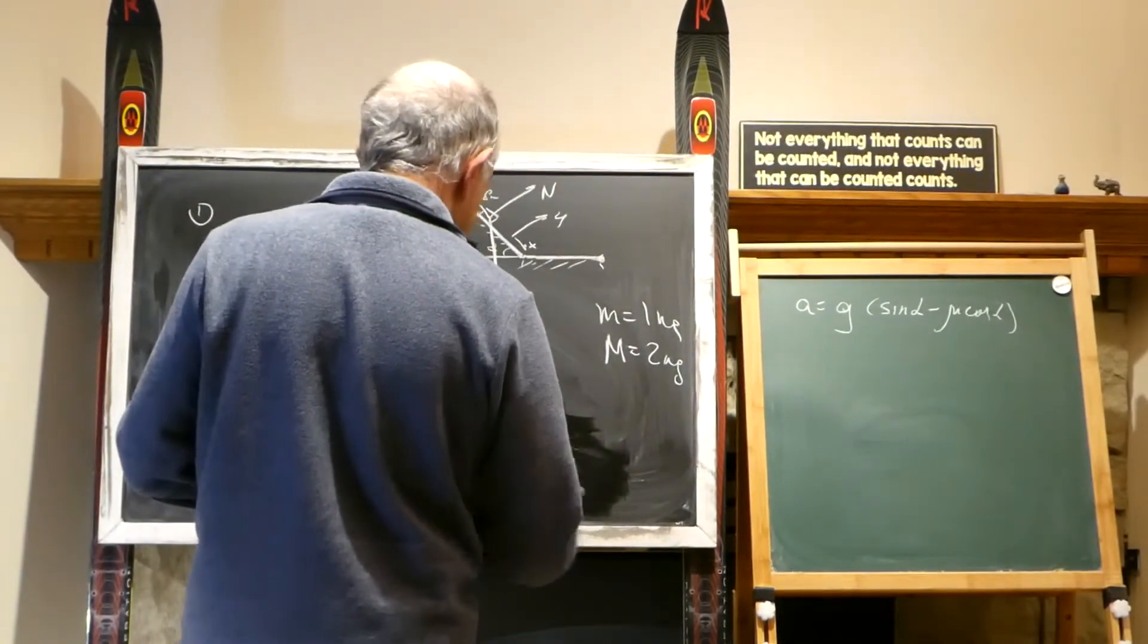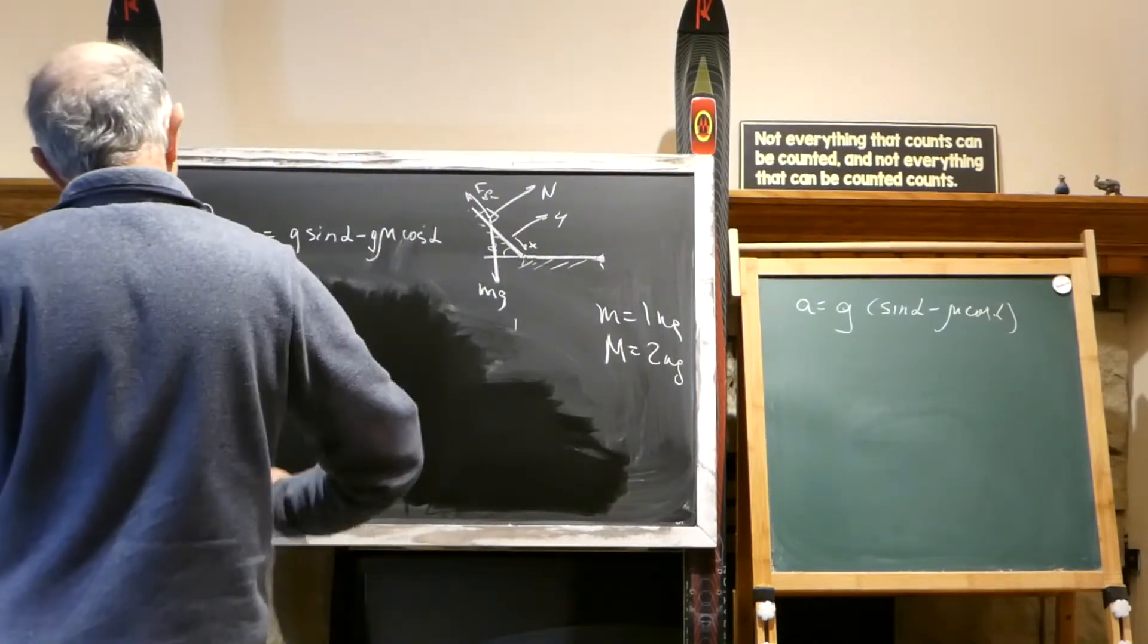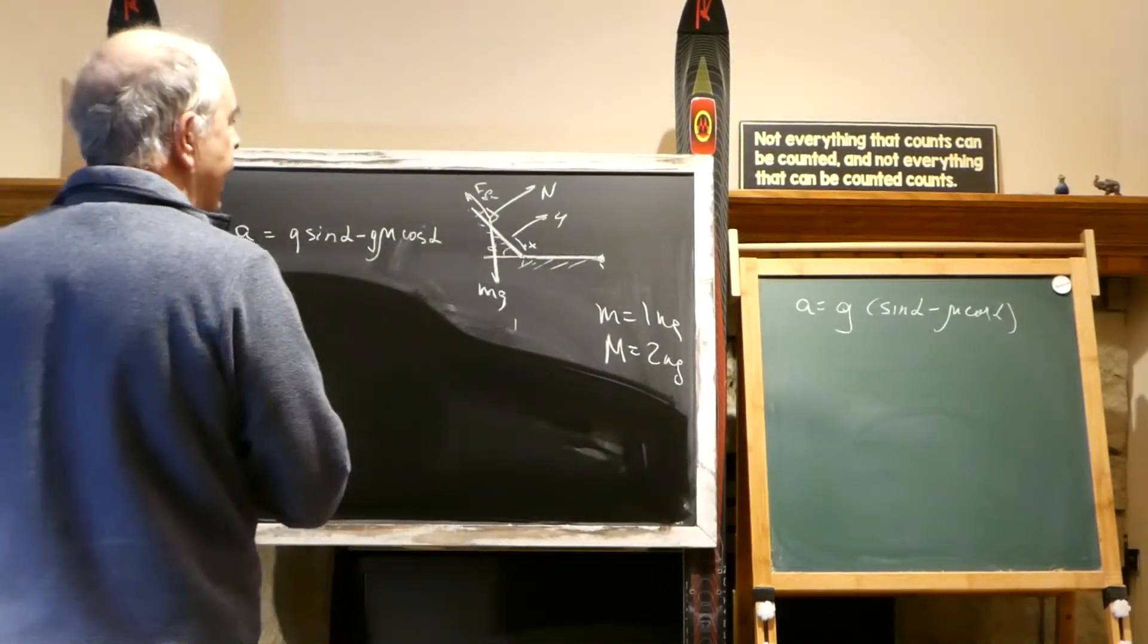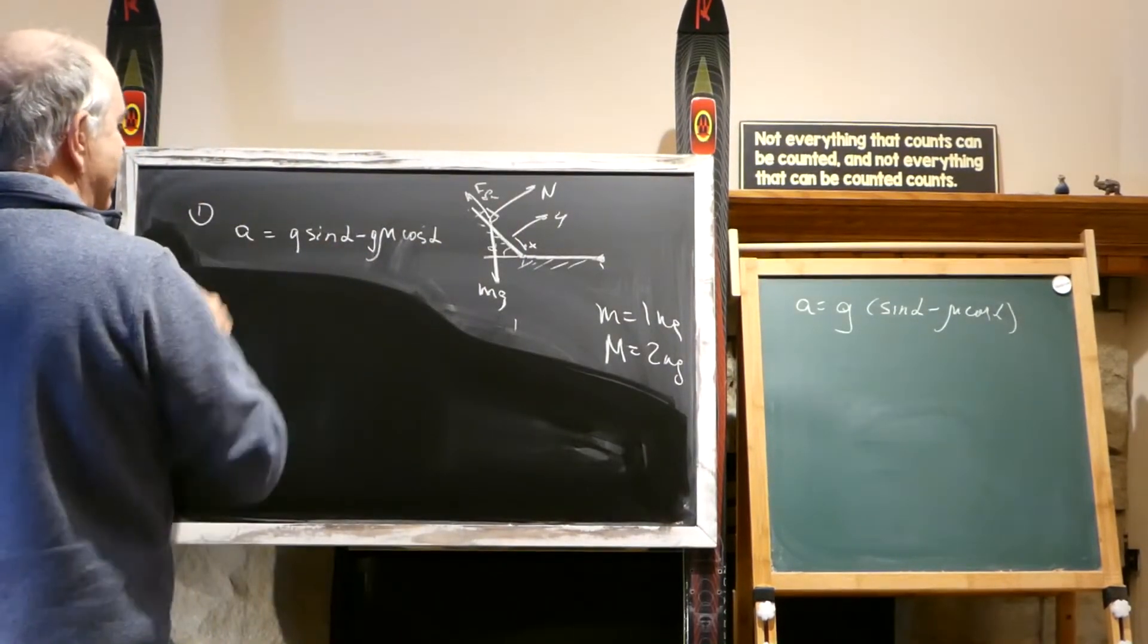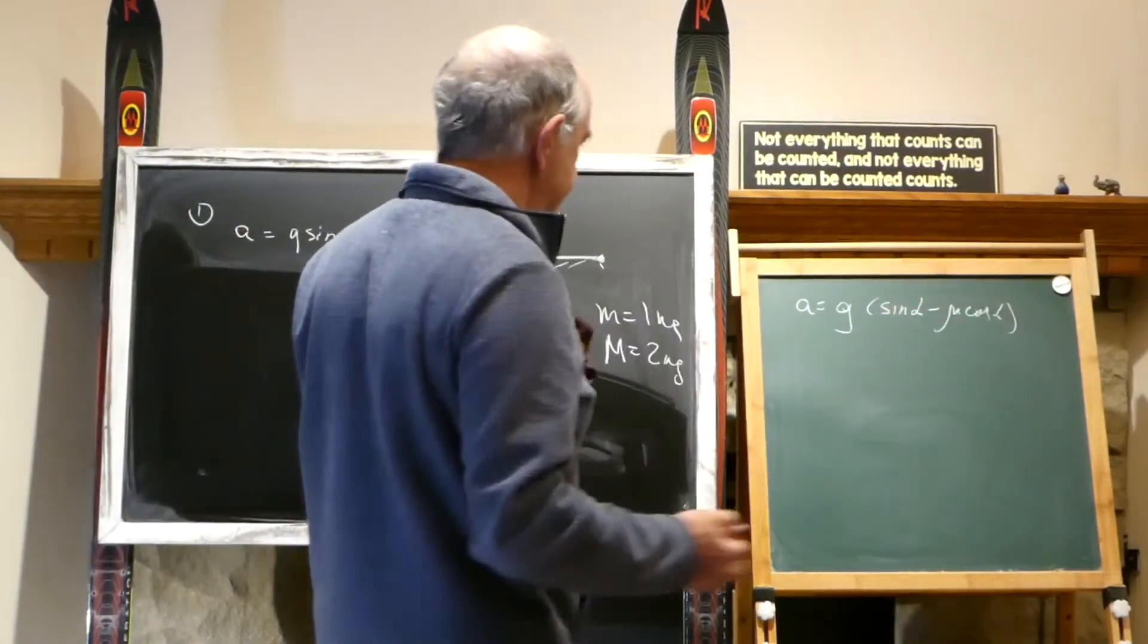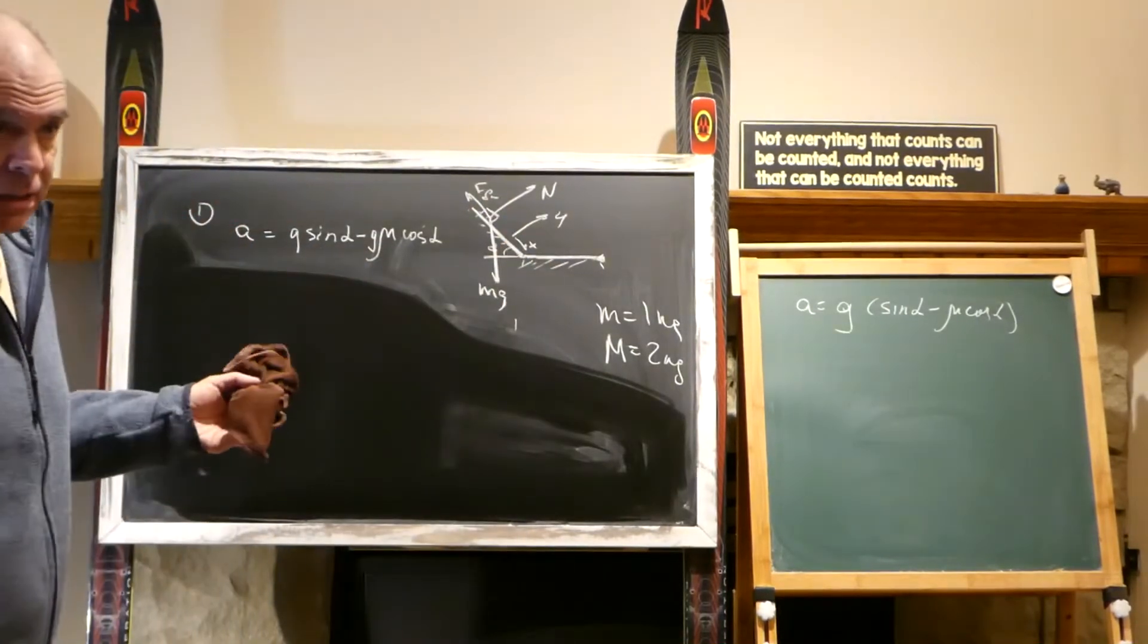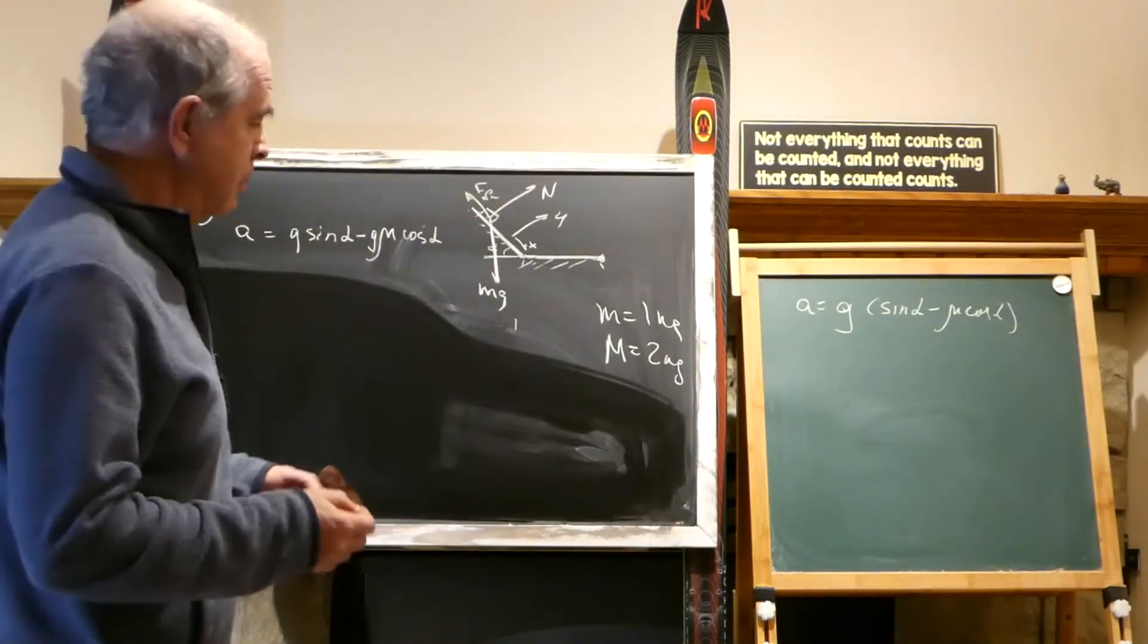But the important thing is that whether we're freefalling, whether we're on an incline and there is no friction, or we're on an incline like here and there is friction, it still doesn't matter. The A is the same no matter what the mass is. Mass is cancelled out. That means that this body and this body will be sliding with the same acceleration. If they're sliding with the same acceleration,